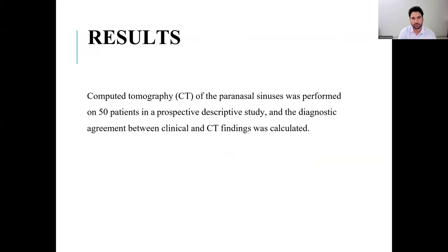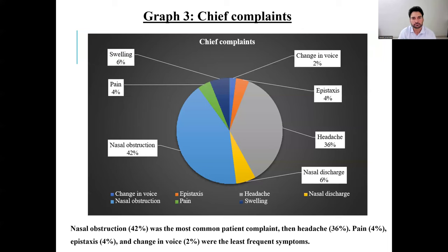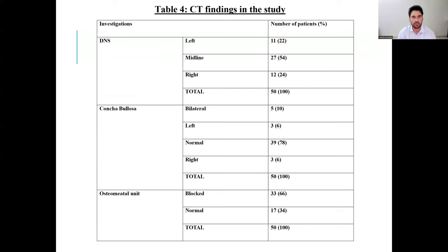CT was performed as the primary investigation in 50 patients in a prospective descriptive study, and the diagnostic agreement between clinical and CT findings was calculated. The chief complaints included change of voice in one patient, epistaxis, headache, nasal discharge, nasal obstruction, pain, and swelling. Nasal obstruction was the most common complaint found in 42% of patients, followed by headache at 56%, pain in 4 patients, epistaxis in 4, and change of voice in 2 patients being the least frequent symptoms.